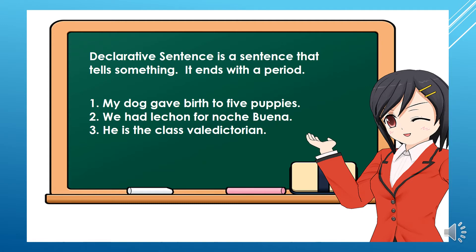A declarative sentence is a sentence that tells something. It ends with a period. For example: 'My dog gave birth to five puppies.' 'We had lechon for noche buena.' 'He is the class valedictorian.'